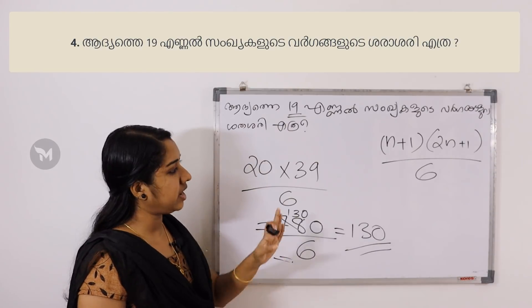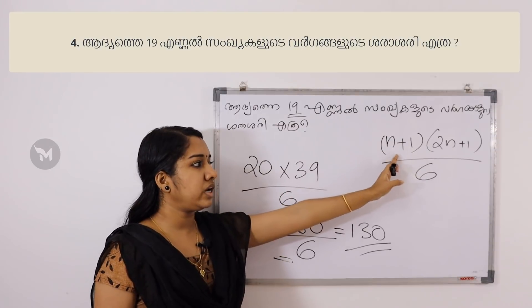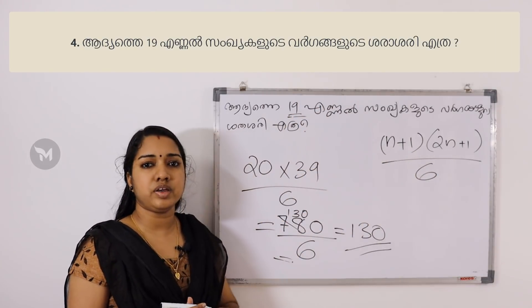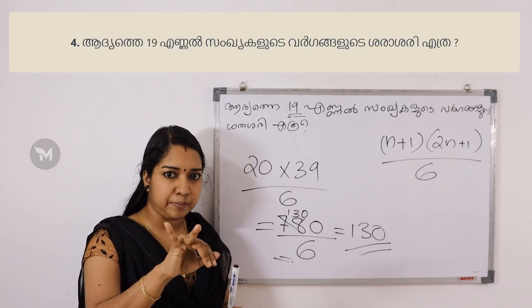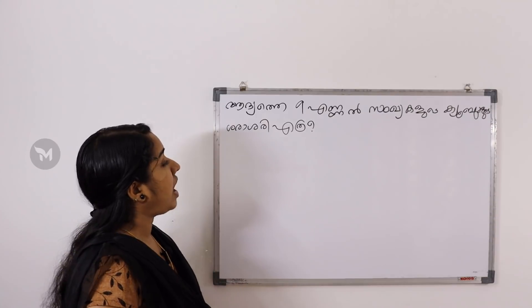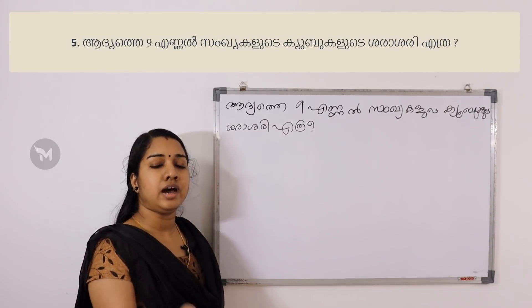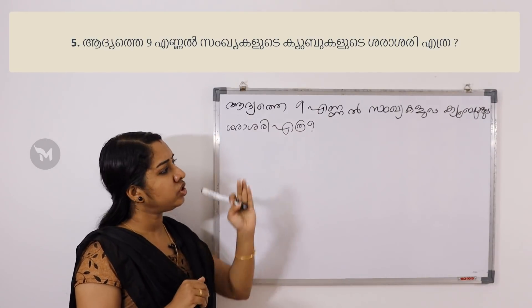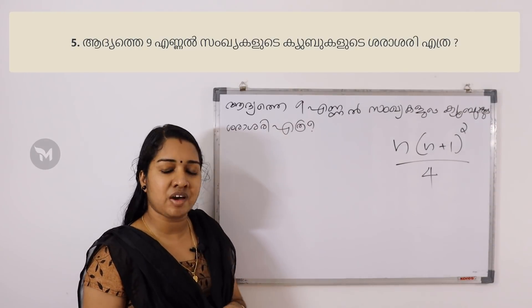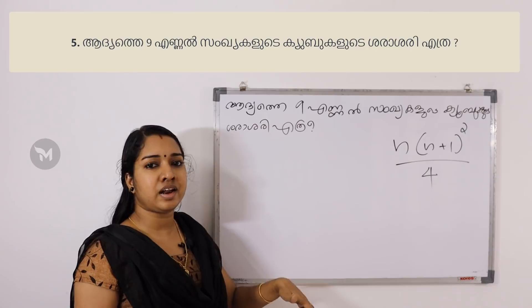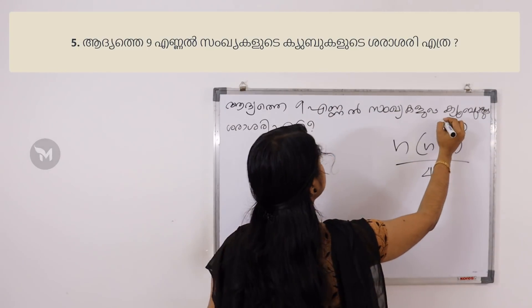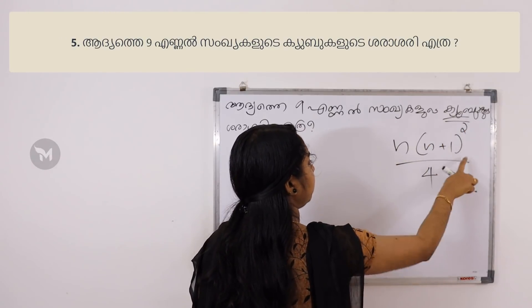Thank you for your experience. If you have already guessed the equations, your equations will present 2n ± 1 by 6, where n is equal to 1. Now the next question: n ± 1 is equal to a cube. The equation is n into n plus 1, whole square, divided by 4.